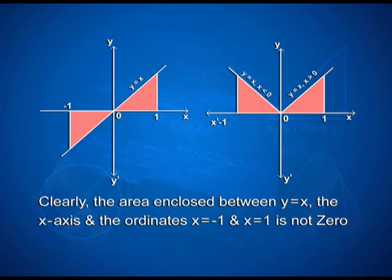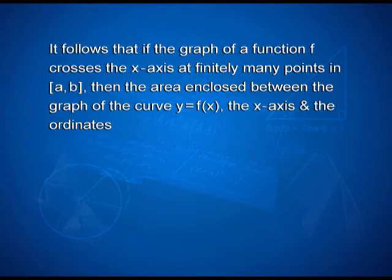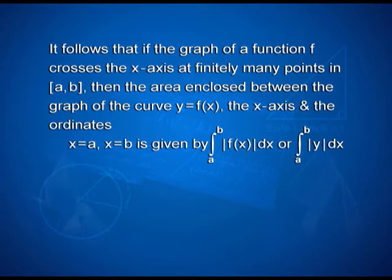Here we can clearly see that the area enclosed between y = x, the x-axis, and the ordinates x = -1 and x = 1 is not 0. It follows that if the graph of a function f crosses the x-axis at finitely many points in the interval [a, b], then the area enclosed between the curve y = f(x), the x-axis, and the ordinates x = a and x = b is given by ∫a to b |f(x)|dx or ∫a to b |y|dx.